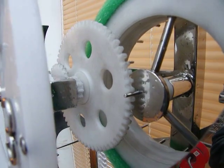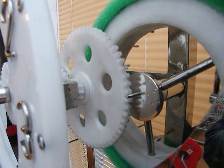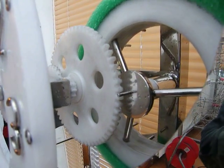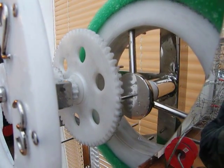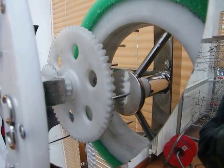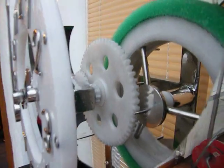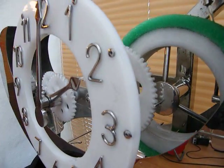This clock ticks with the escapement wheel rotating once every 30 seconds. From then on, I had to make a two-to-one gearbox to get to the front set of gears, which as everybody knows is 12 to 1.